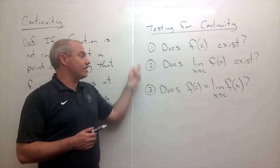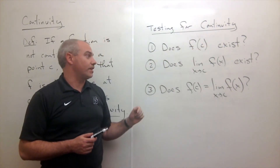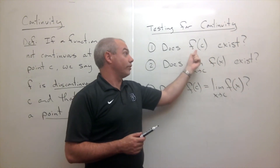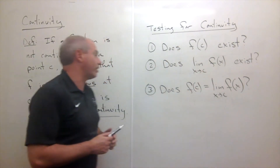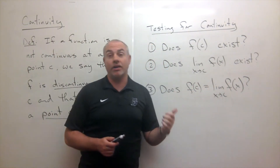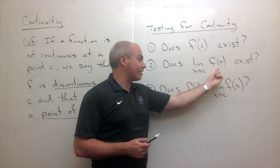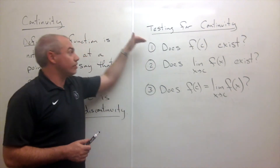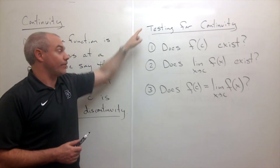If any of these three things are not true, the function is not continuous. So: if there is no functional value, not continuous at c. Second, does a limit exist as x approaches c? Remember, that's different from the functional value. If no limit exists, it's not continuous. Third: is the functional value and the limit value the same thing? If they are, it's continuous. It's possible a function has both a functional value and a limit value but they're not the same — in that case, it's also not continuous. All three questions must be answered yes.